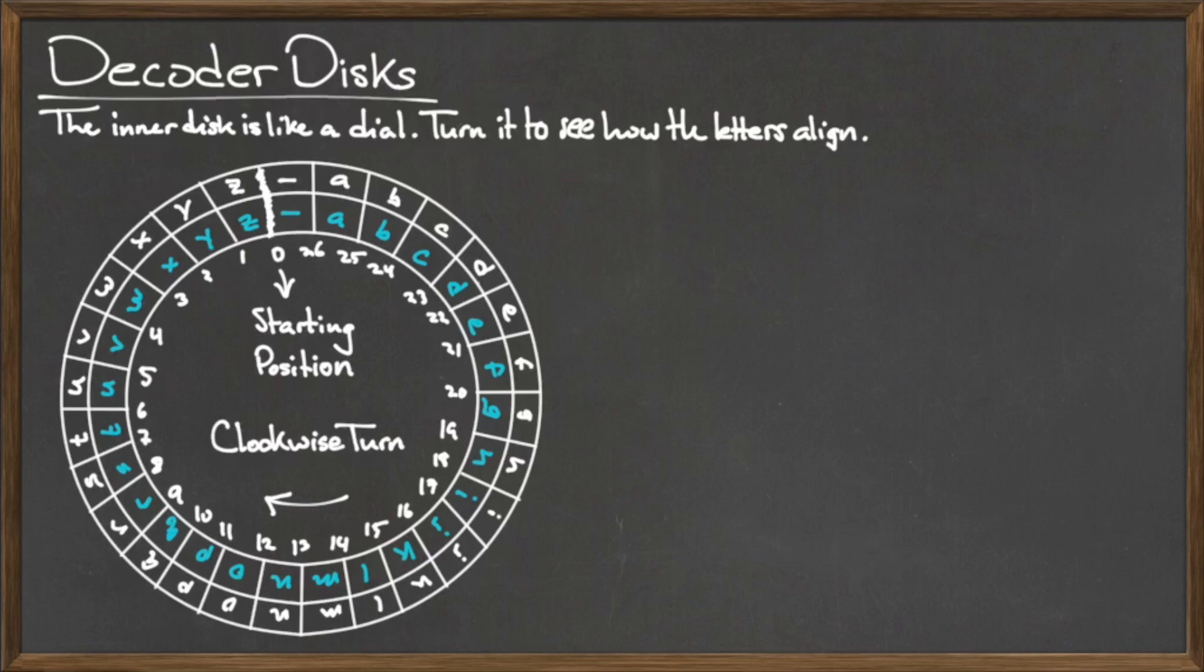When encrypting a plaintext message, we shift the alphabet backwards by N spaces. To do this, we label the character space with a 0, we label Z with a 1, Y with a 2, and so on, with A receiving the label 26.